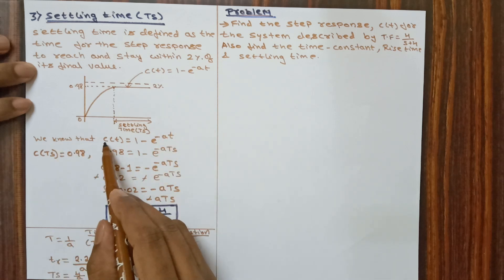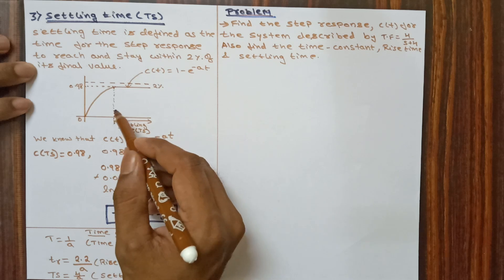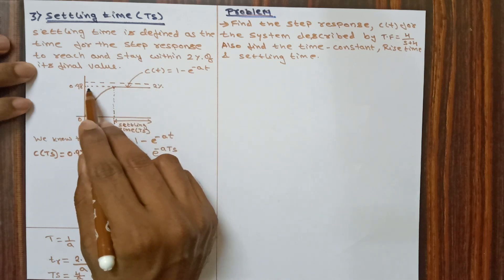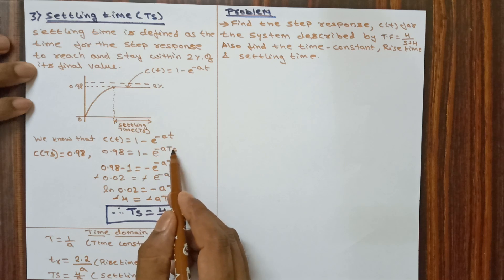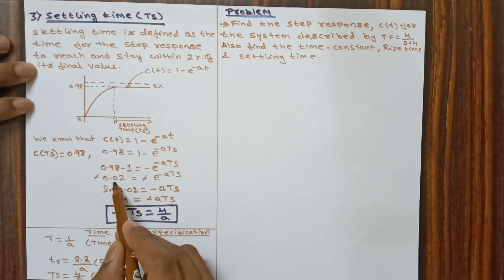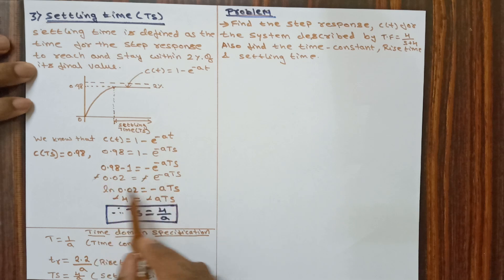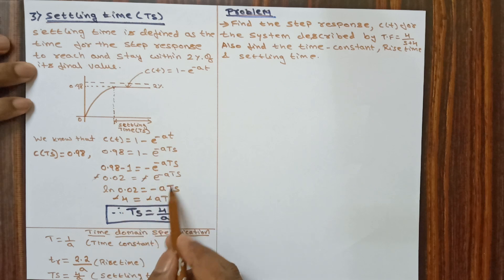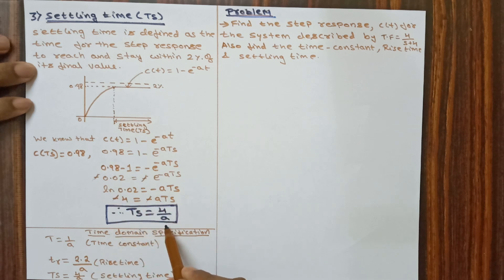We know that C(t) equals 1 minus e power minus aTS. At the settling condition (2% band), 0.98 equals 1 minus e power minus aTS. Rearranging: 0.98 minus 1 gives minus 0.02 equals minus e power minus aTS. The negatives cancel. Applying log on both sides: log 0.02 gives approximately minus 4, which equals minus aTS. The negatives cancel, so settling time TS equals 4 by a.